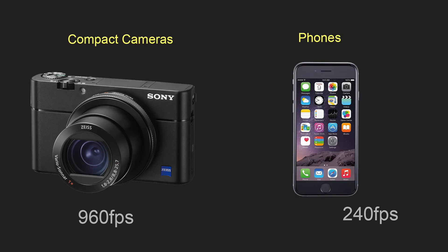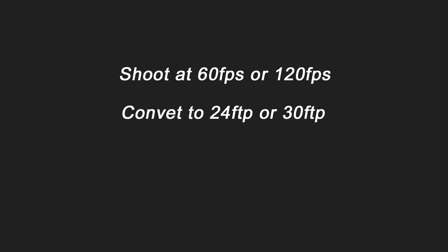Unlike compact cameras and even phones — for example, with the iPhone you can get a frame rate of 240 frames per second — DSLRs lag behind, and I really hope they will catch up soon. The way you get slow motion is by converting your frame rate in post-production to 24 or 30 frames per second.